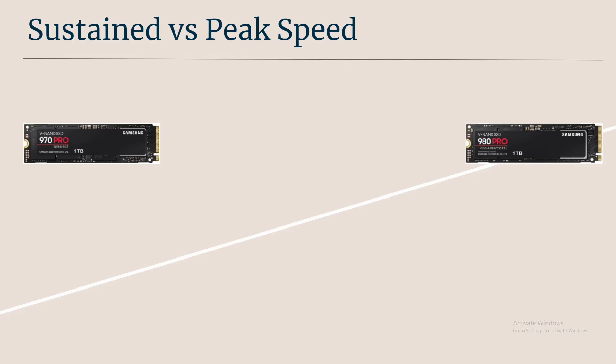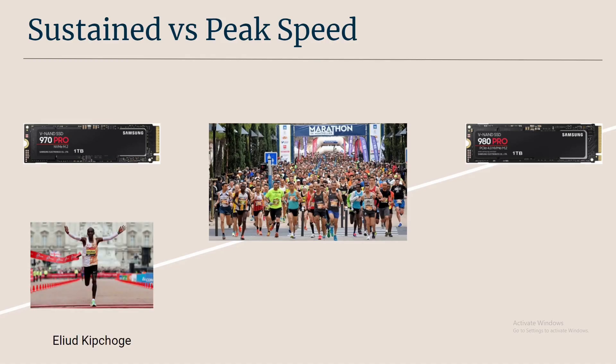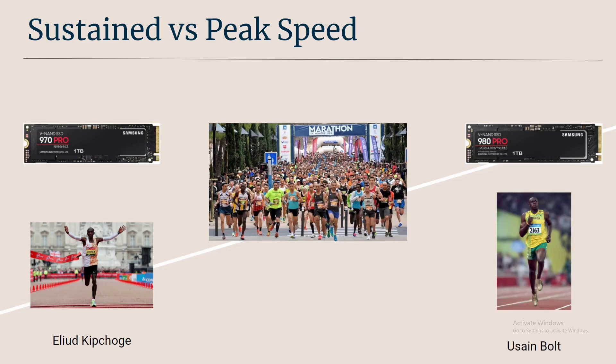Before we look at the results, I want to talk about sustained versus peak speed. The plotting process is more like a marathon, so you want a marathon runner. That's why I think the 970 Pro is like a marathon runner like Eliud Kipchoge, and the 980 Pro is more like a sprinter like Usain Bolt. In a marathon you'd think the marathon runner will win, but we'll see what a sprinter can do.